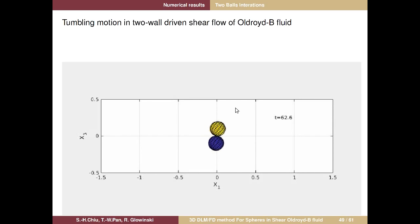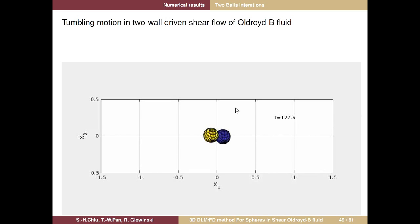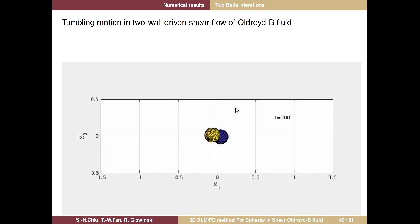After t > 60, you will see something different — one ball appears to overlap the other, but this is just a projection effect. The particles are not actually overlapping; they are still rotating with each other. The two centers of mass have left the shear plane (x2 = 0) and are still rotating — this leads into what we call kayaking motion.